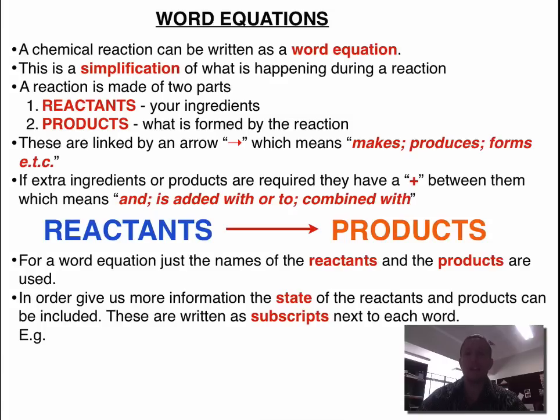To formulate a word equation, all we need to do is find what things we put together to make the reaction. They will make up our reactants. Then, in the question, we need to find out what was produced. They are our products.